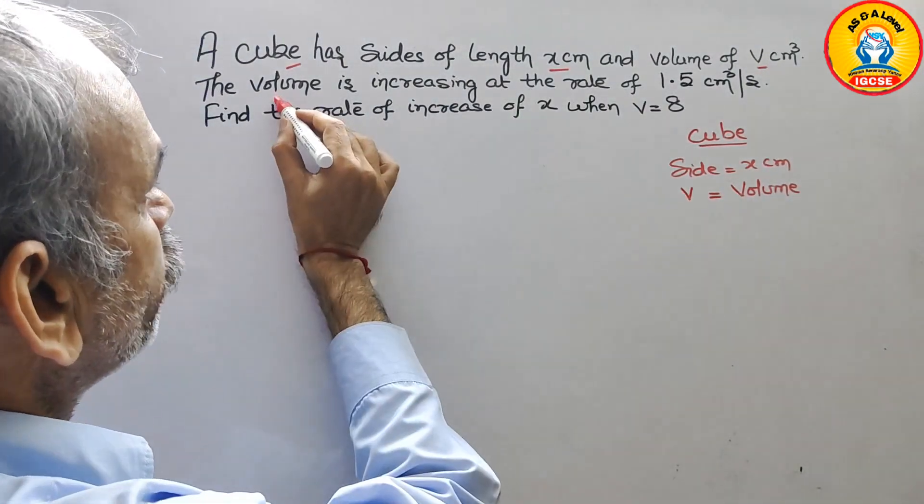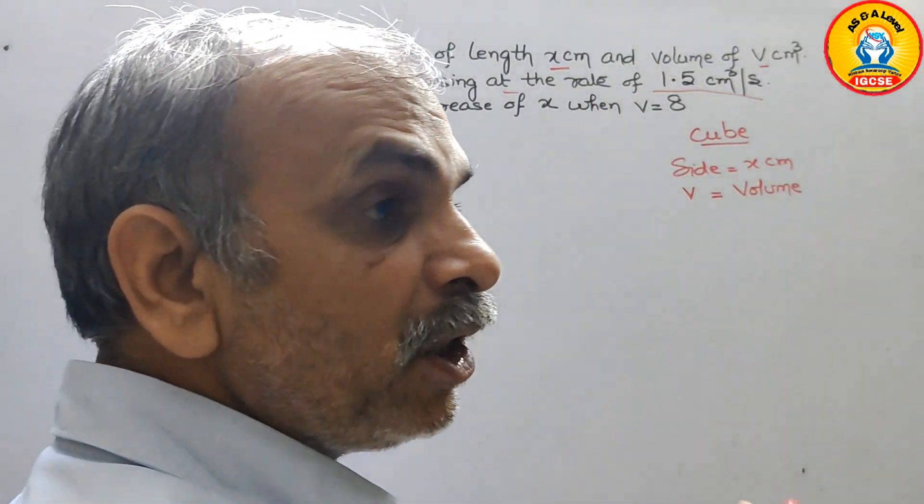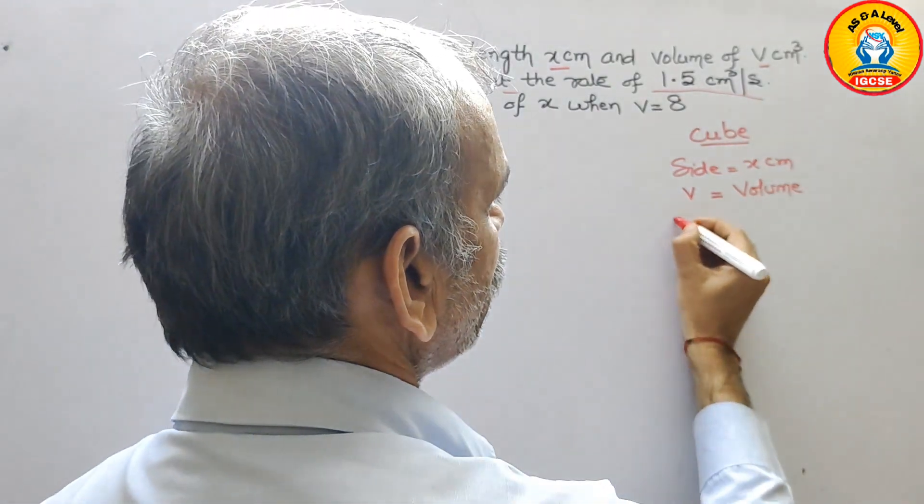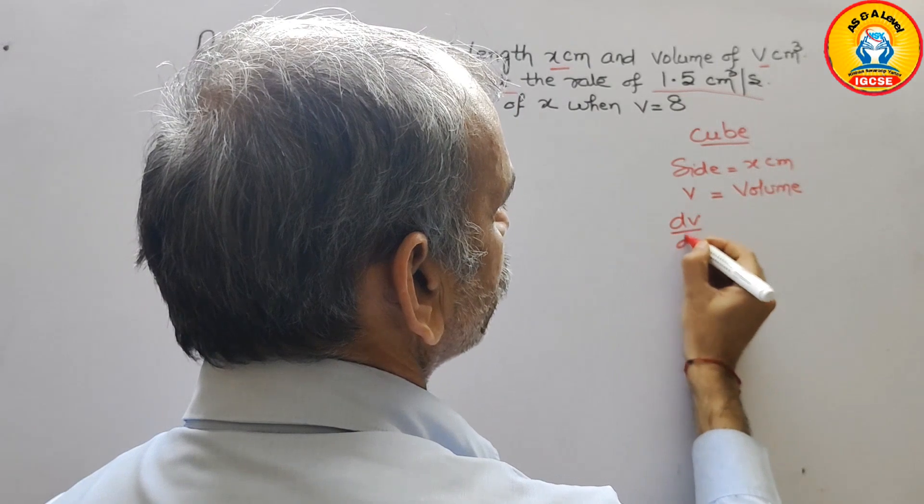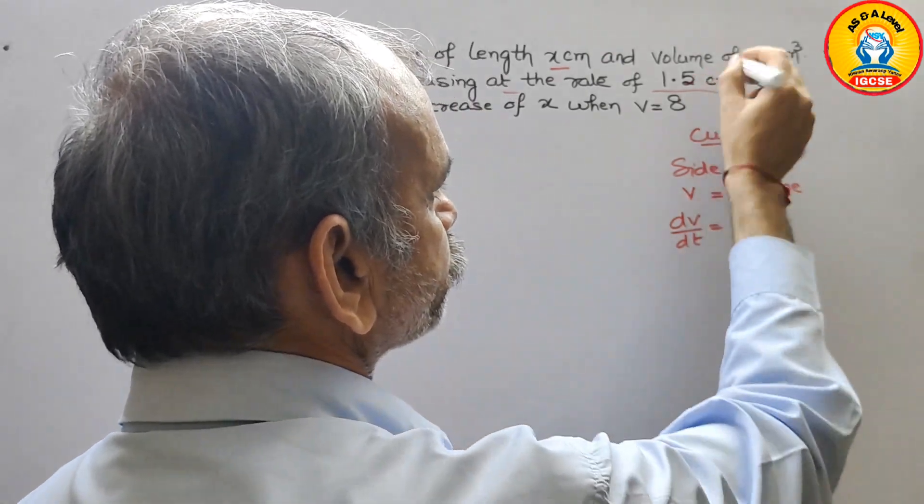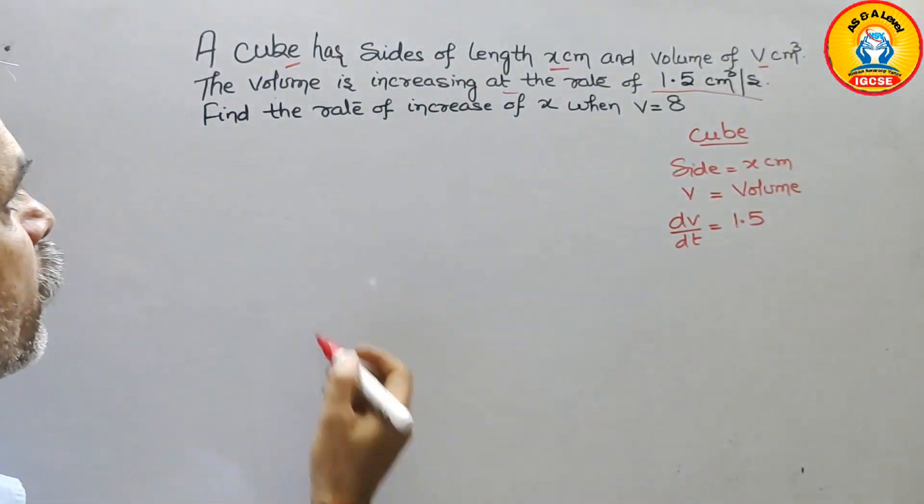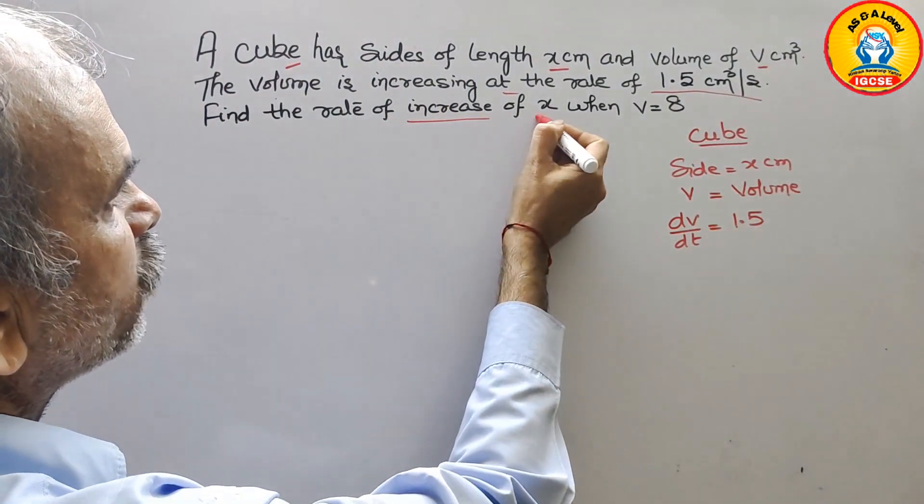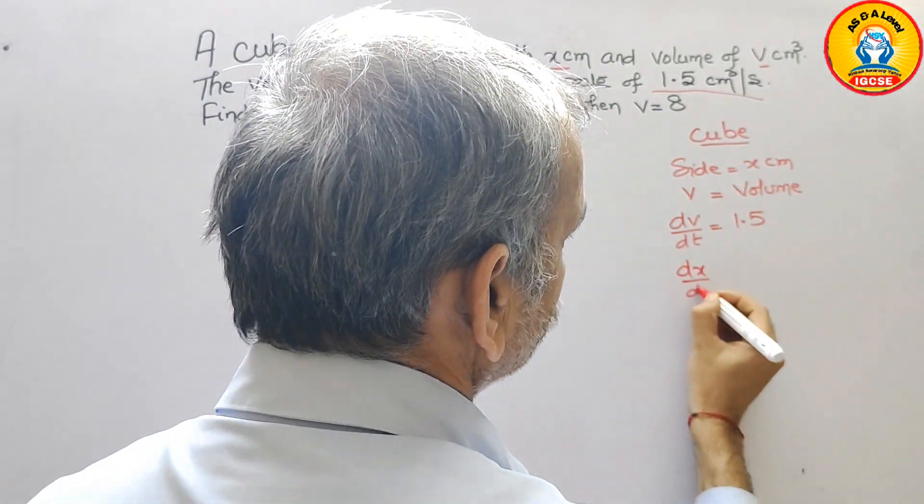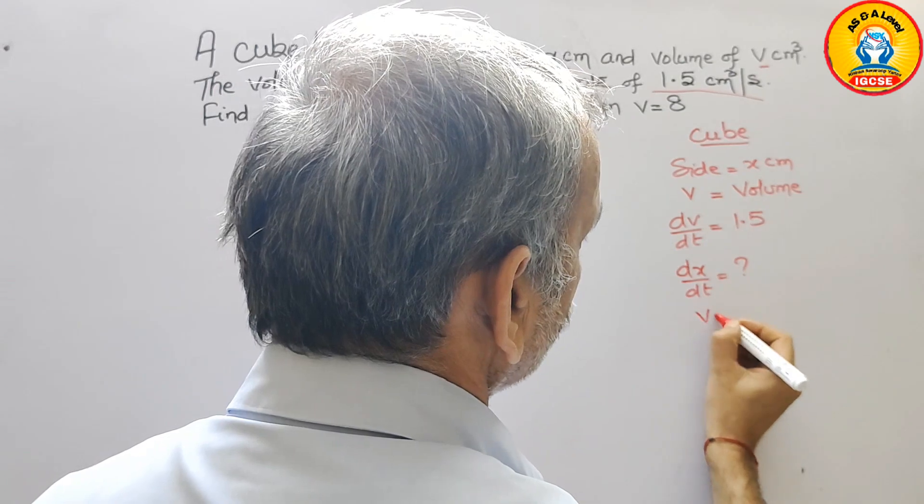What they have told: the volume is increased at the rate of 1.5 centimeter cube per second. That means it is nothing but dv by dt. That is equal to 1.5. Find the rate of increase of x, that means we have to find dx by dt when v is equal to 8.